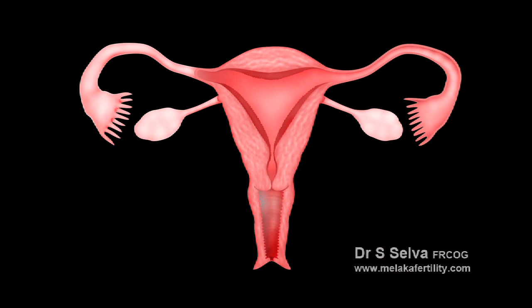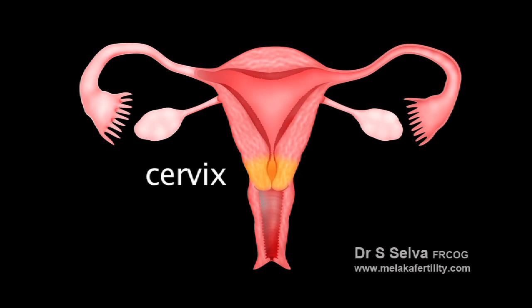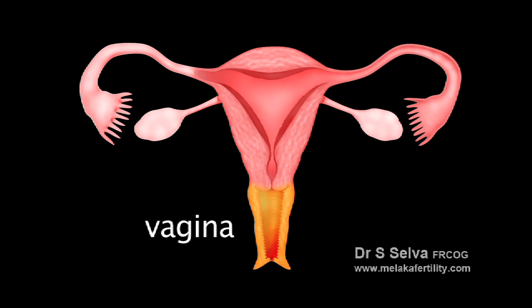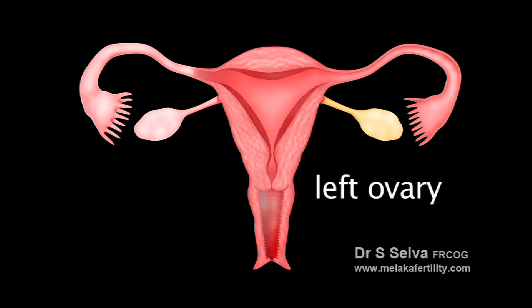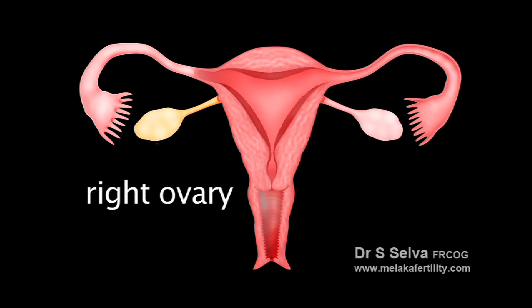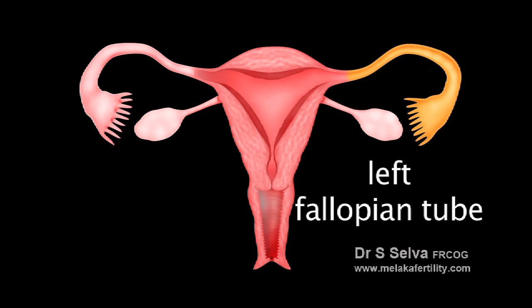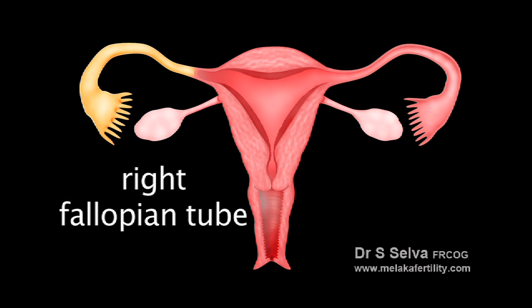This is a diagrammatic representation of the front view of a female reproductive system. This is the uterus. This is the cervix and this is the vagina. This is the left ovary and this is the right ovary. This is the left fallopian tube and this is the right fallopian tube.